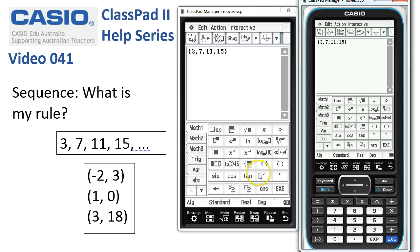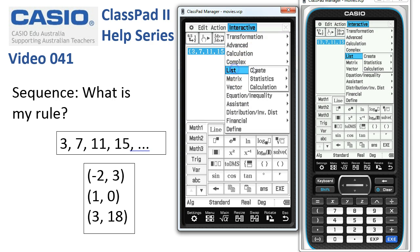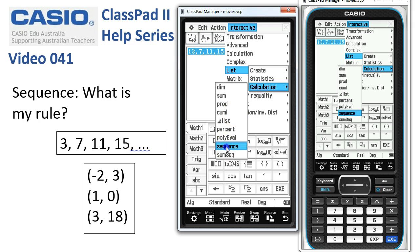So once our list has been selected, we're going to drag over it to select, tap on to Interactive, down to List, Calculation, and Sequence.